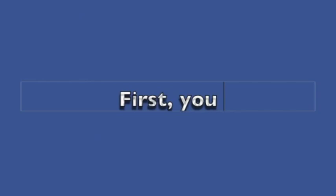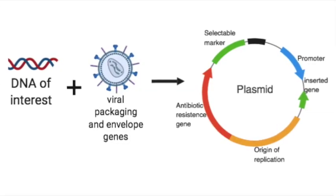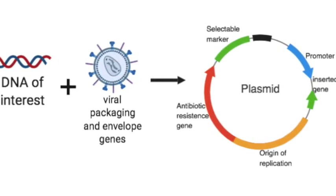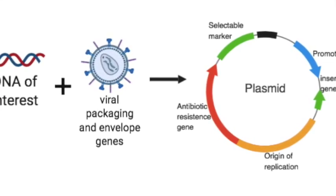The lentivirus vector is constructed as follows. The gene to be transferred is flanked by viral sequences that can be recognized by viral proteins in a packaging cell line to package the viral genome into viral particles.